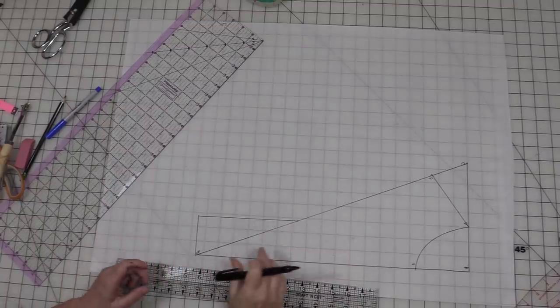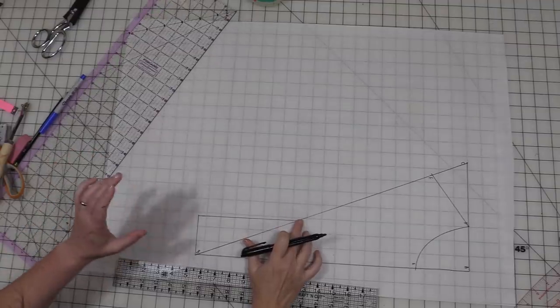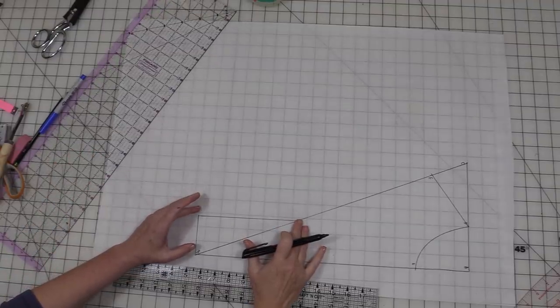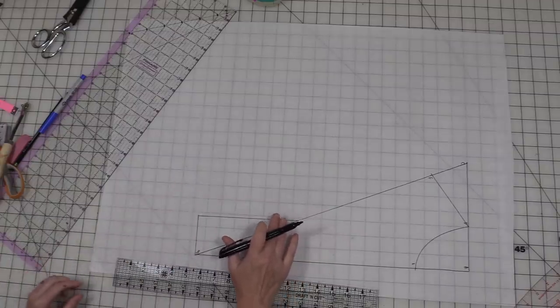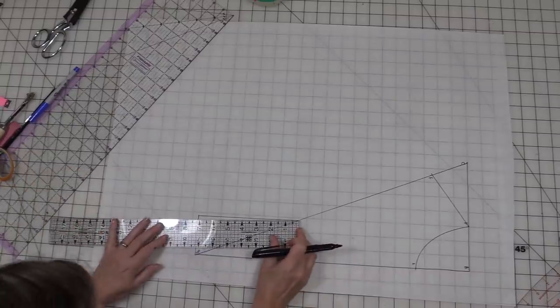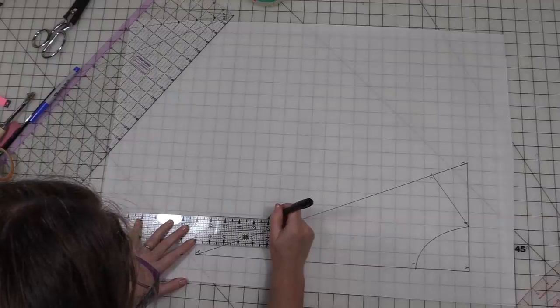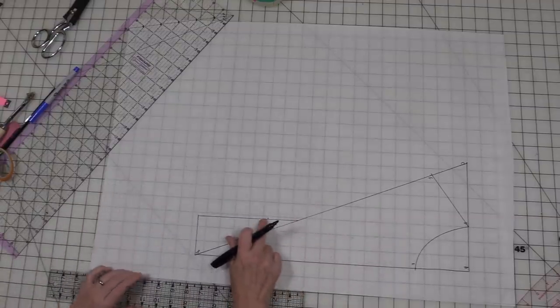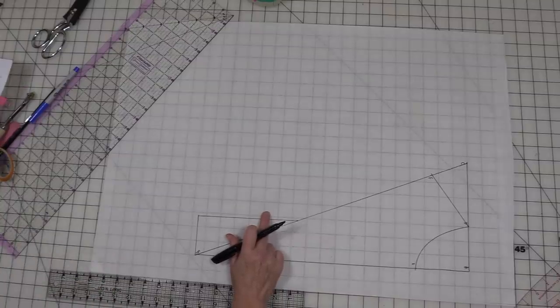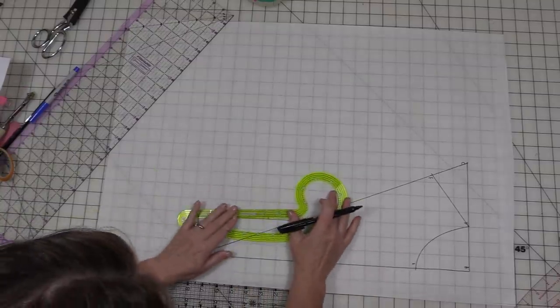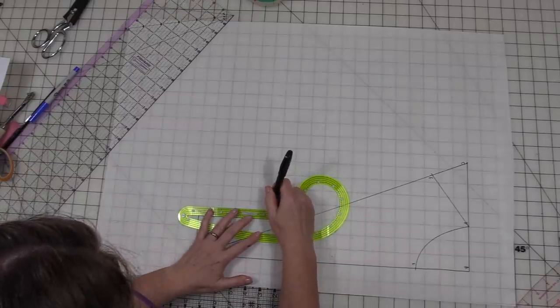So next is going to be our dart leg because you know your darts come out from your bust point. So you're going to want to look at the sheet to get the exact measurement that we have over on the website because it depends on the difference between your high bust and your full bust. So what we're going to do is come down two inches and make a mark. Everybody's going to come down two inches. The difference is going to be how far out you come. For me it's five eighths.